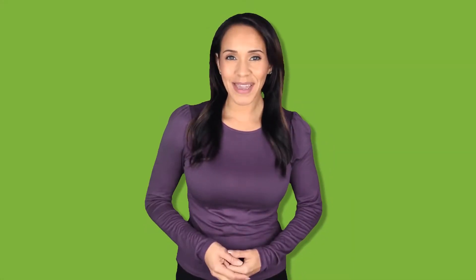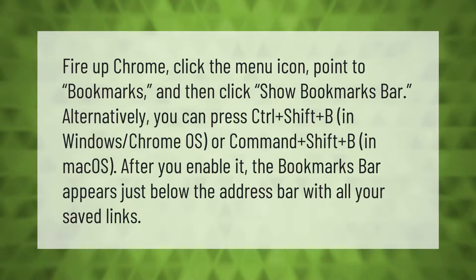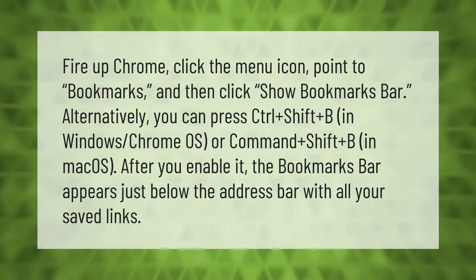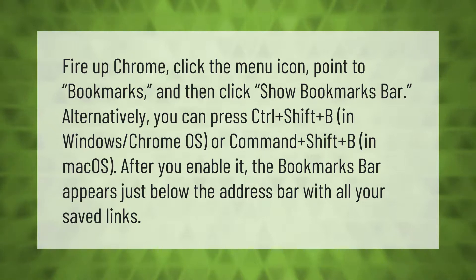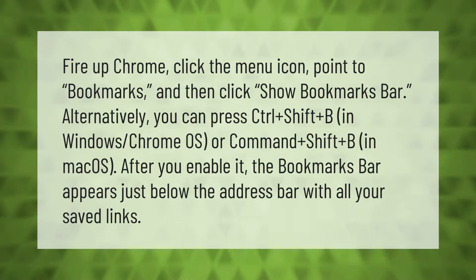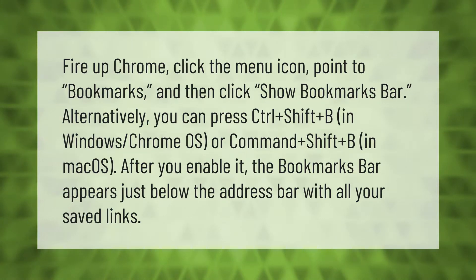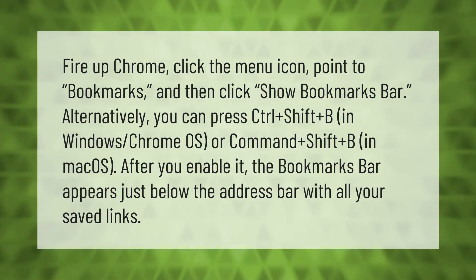Fire up Chrome, click the menu icon, point to Bookmarks, and then click 'Show bookmarks bar.' Alternatively, you can press Ctrl+Shift+B in Windows or Chrome OS, or Command+Shift+B in macOS. After you enable it, the bookmarks bar appears just below the address bar with all your saved links.